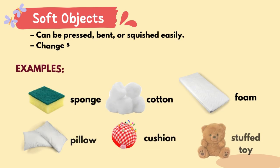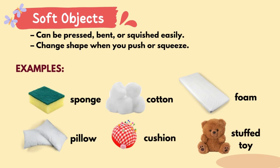What are Soft Objects? Soft objects are objects that can be pressed, bent, or squeezed easily. They also change shape when you push or squeeze. Examples: sponge, pillow, cotton, cushion, foam, and stuffed toy.